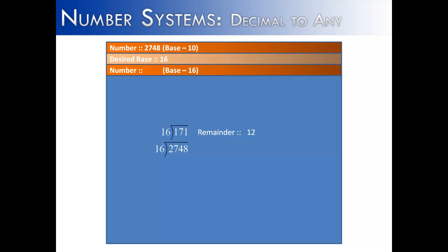That goes 171 times with a remainder of 12. Then 16 goes into 171 10 times with a remainder of 11. And then finally, the base is larger than what it's being divided into. We get 0 as the quotient with a remainder of 10.